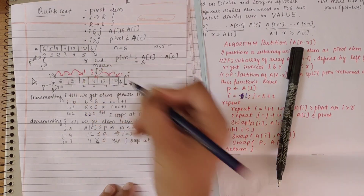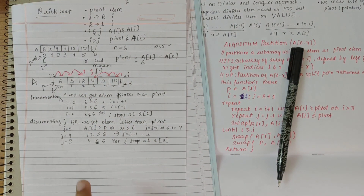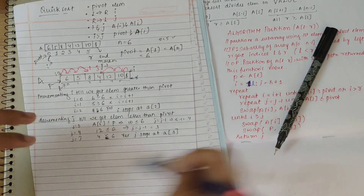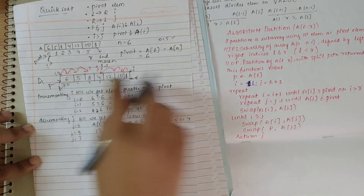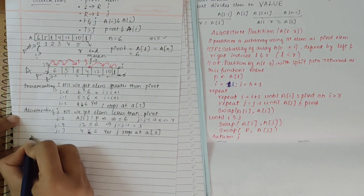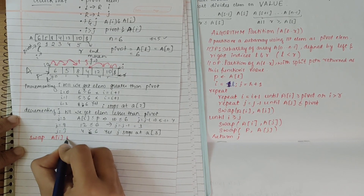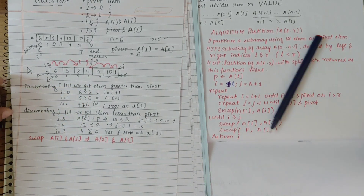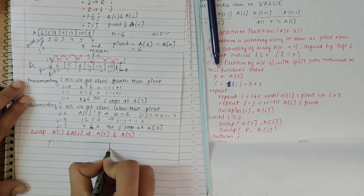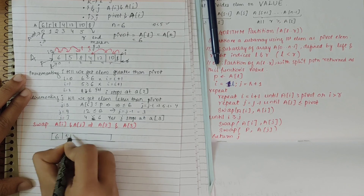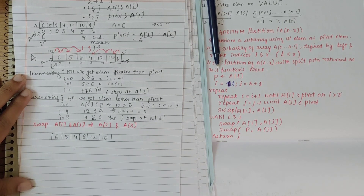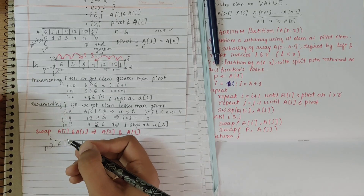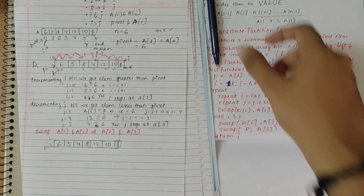Now i is at index 2 and j is at index 3 — they are beside each other. Since i is not greater than j, we swap a[i] and a[j], i.e., swap a[2] and a[3]. The updated array becomes: 6, 5, 4, 8, 12, 10. Pivot remains 6, i is now at index 2, j at index 3.